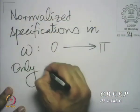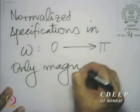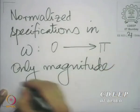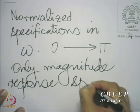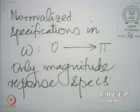What we have as specifications are only the magnitude specifications. The phase response is just going to be a consequence of the design — we have very little control on it, and we will just accept whatever phase response we get.